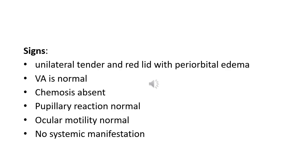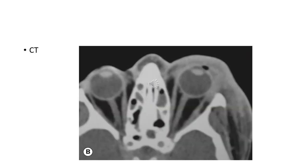The signs of preseptal cellulitis include unilateral tender and red lids with periorbital edema. In contrast to orbital cellulitis, proptosis and chemosis are absent; visual acuity, pupillary reaction, and ocular motility are unimpaired. There is no systemic manifestation. CT scan shows opacification of soft tissue anterior to the orbital septum, while the deep orbital tissue remains intact.